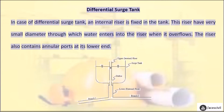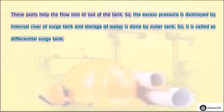Differential surge tank: In the case of a differential surge tank, an internal riser is fixed in the tank. This riser has a very small diameter through which water enters into the riser when it overflows. The riser also contains annular ports at its lower end. These ports help the flow into or out of the tank. So, the excess pressure is dissipated by the internal riser of the surge tank and storage of water is done by the outer tank, which is why it is called a differential surge tank.